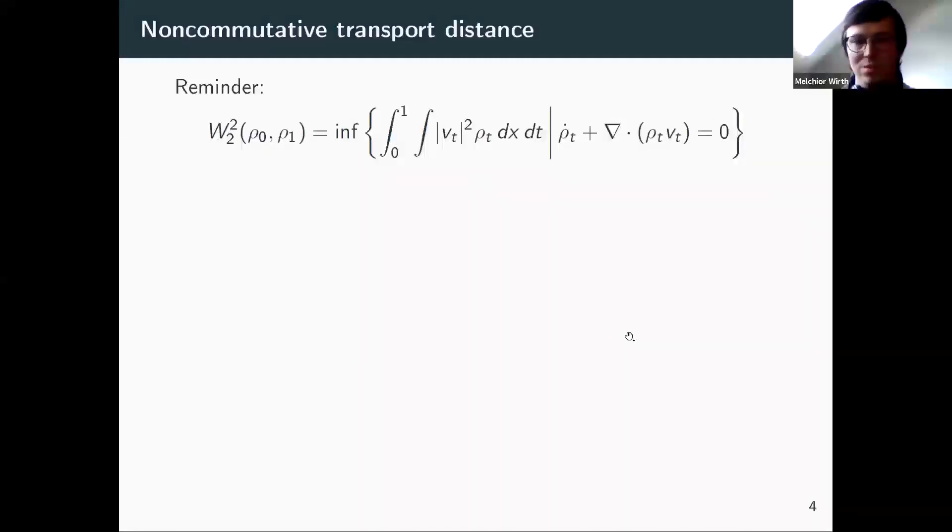Just a short reminder. This here is the formula for the L^2 Wasserstein distance, which is, by the way, due to Benamou and Brenier. Now, if I want to write something similar for QMS, at the first glance, it looks rather obvious what I should do now that I have this differential structure coming from the QMS. So there's a divergence. I'd better replace it by the adjoint of my derivation. Then on the left hand side, there's some integral over an inner product. There's just one thing that's not so obvious.